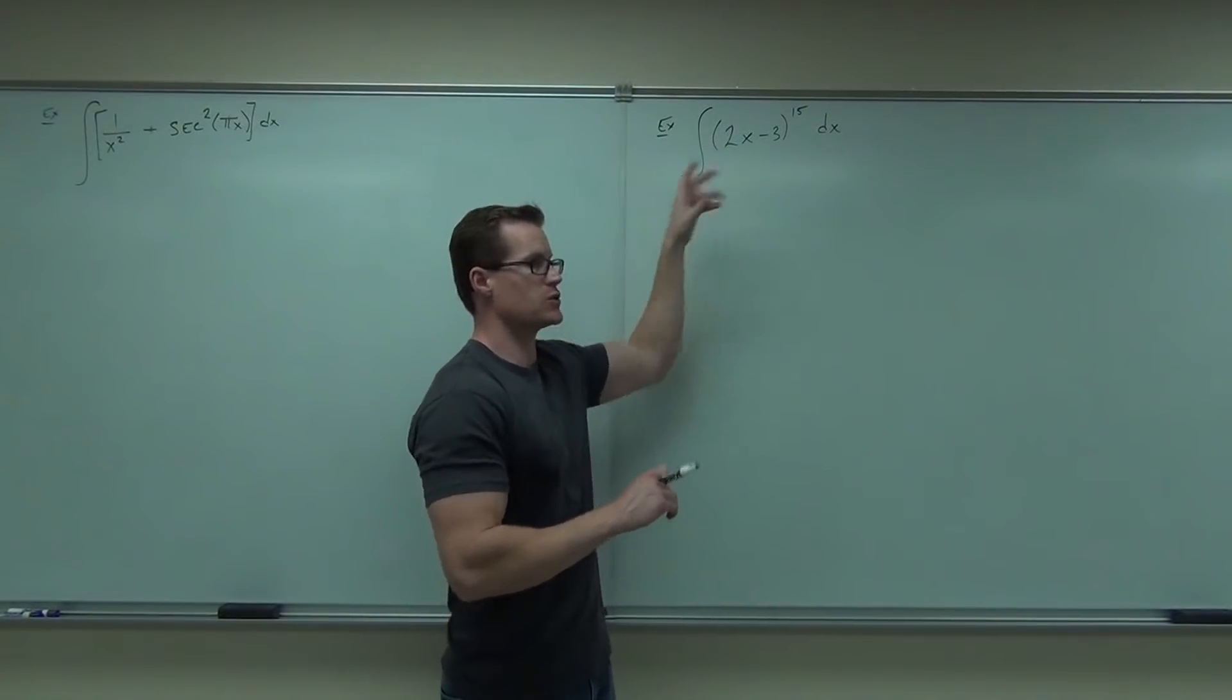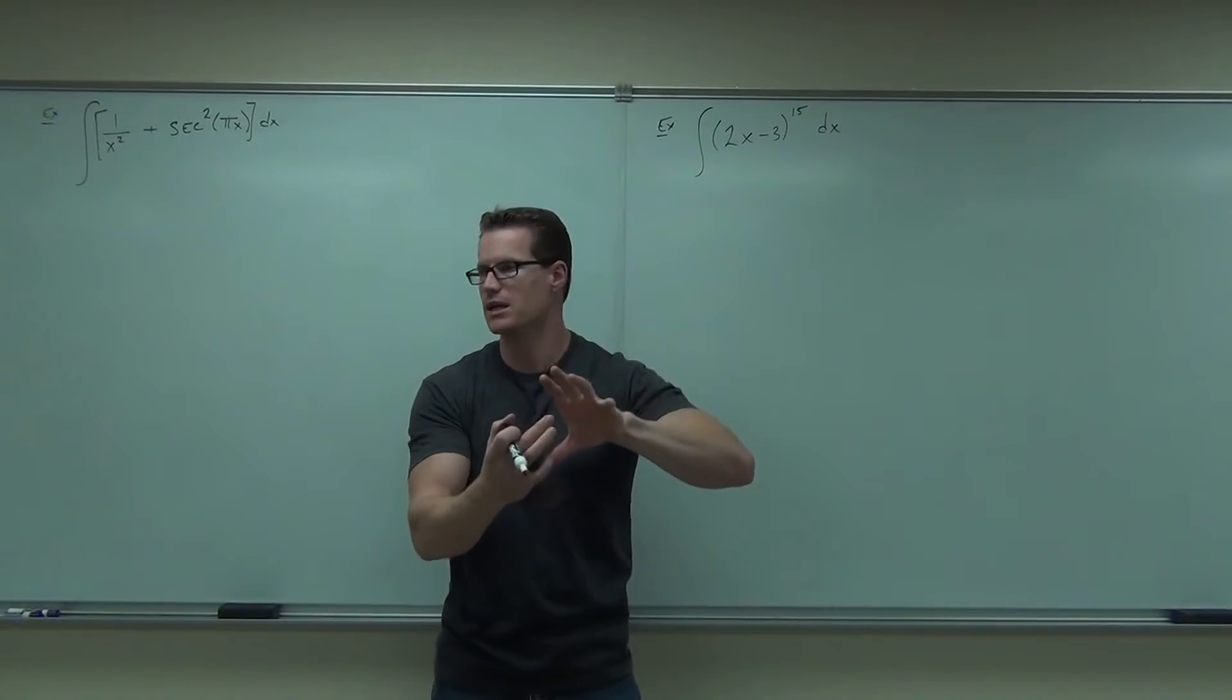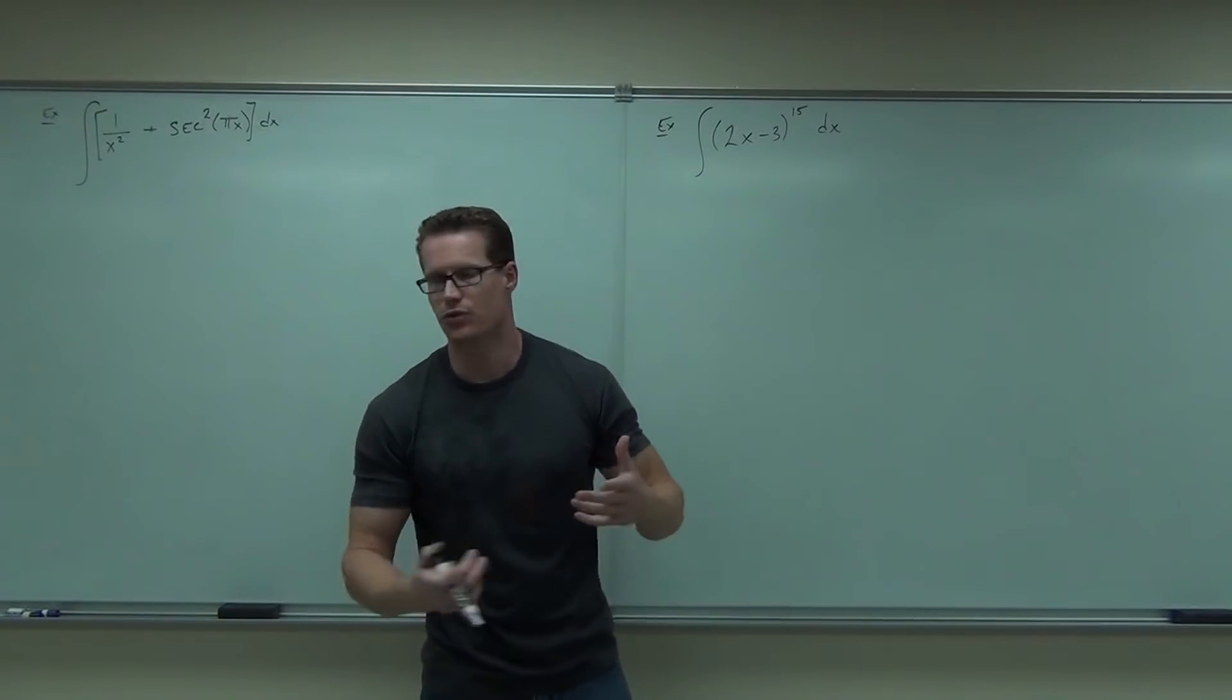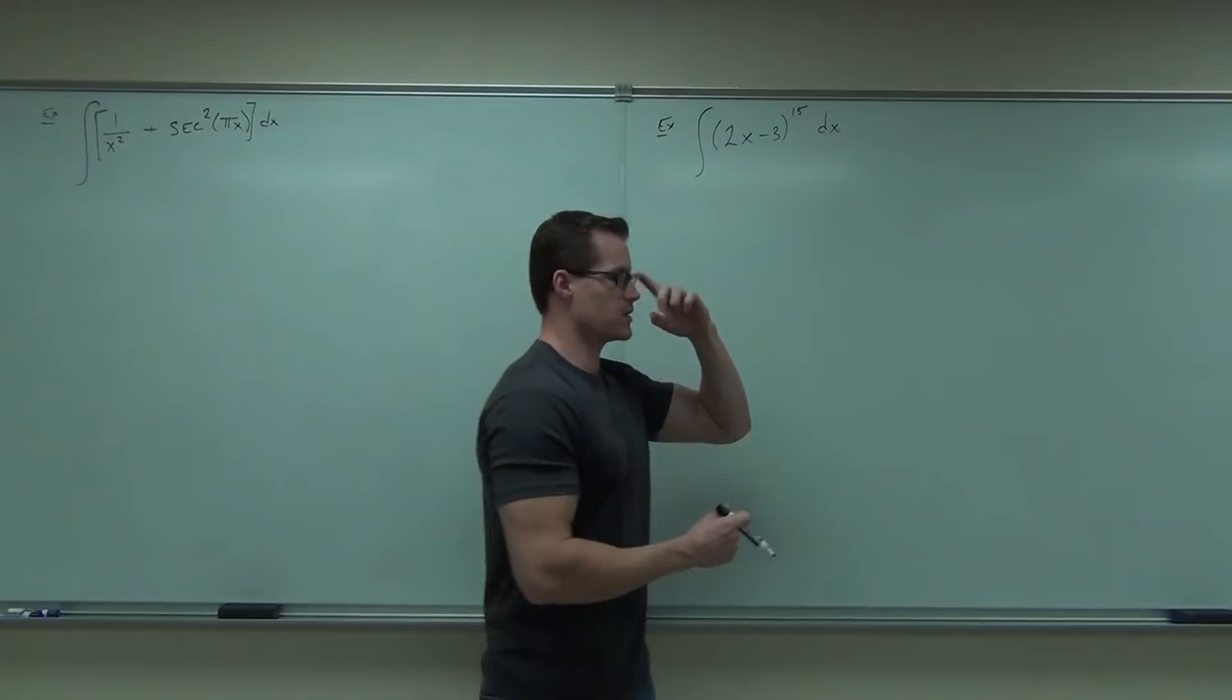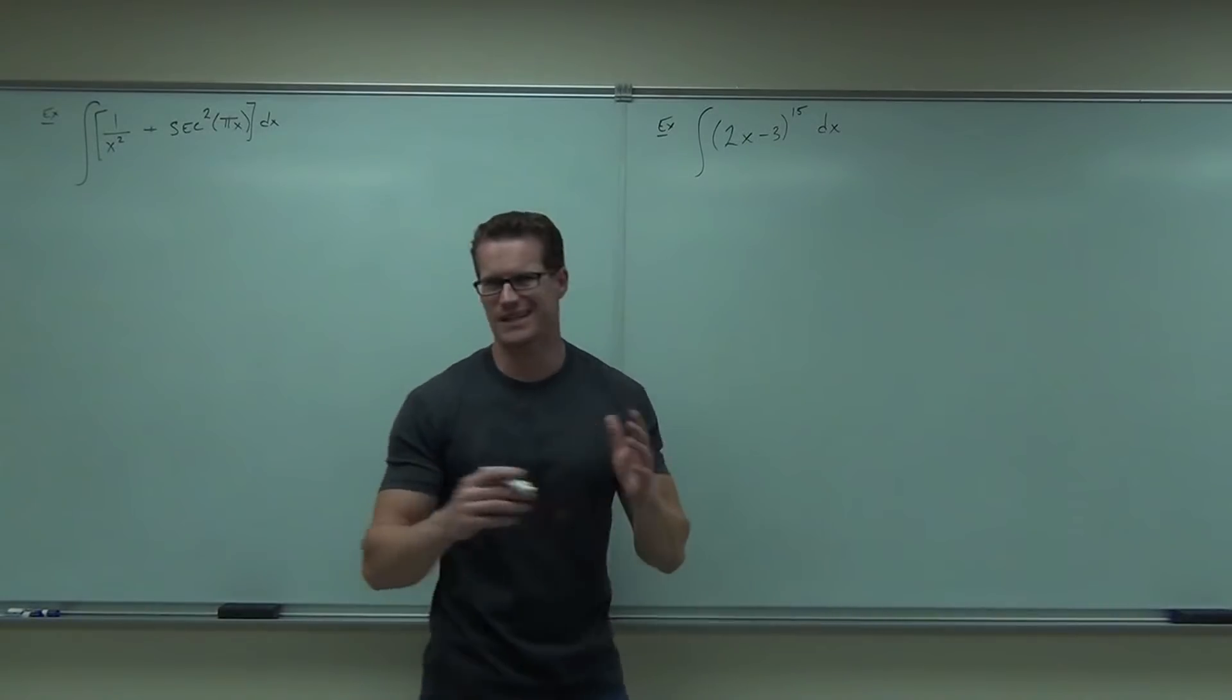So if I took a derivative of that, it's 15, 2x minus... That's not going to appear again in our integral. That's not going to work out for us. So it's almost exclusively the inside of something that you pick for your u. And that works like 90% of the time.